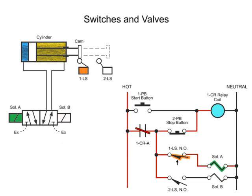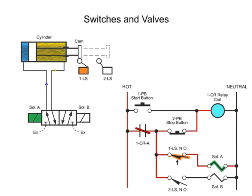Solenoid A operates the hydraulic valve which shifts to allow fluid to flow and extend the cylinder. As the cylinder extends, the cam releases limit switch 1LS which in turn de-energizes solenoid A.